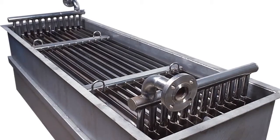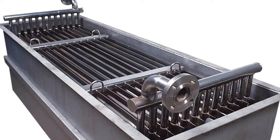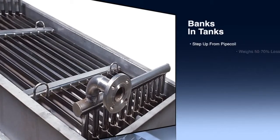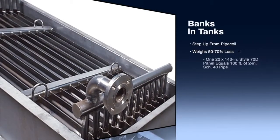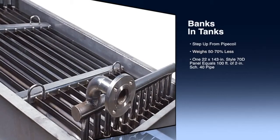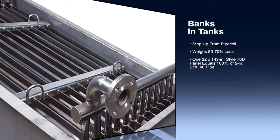In tanks, compact Plate Coil Banks offer at least twice the surface area in a given space, at half the weight as equivalent pipe coil. As immersion heaters, the Plate Coil planar shape induces a chimney effect for natural convection circulation and improved heating uniformity.